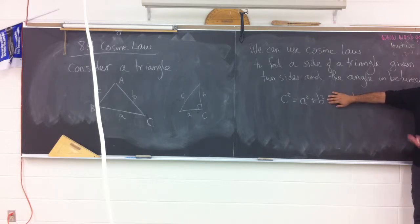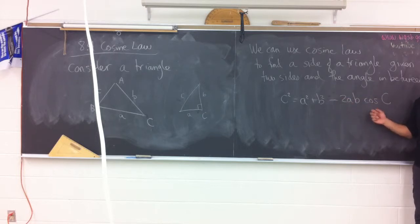And as soon as you have a 90, then it goes back to the Pythagorean theorem. So, this is cosine law. We'll do an example of this now.